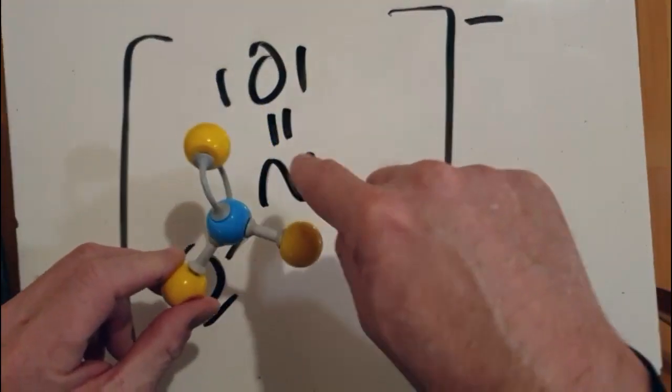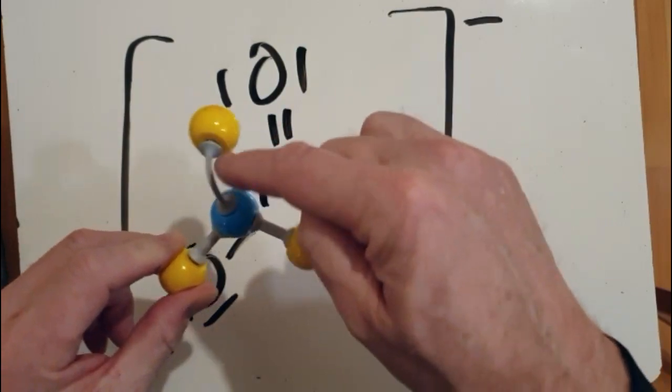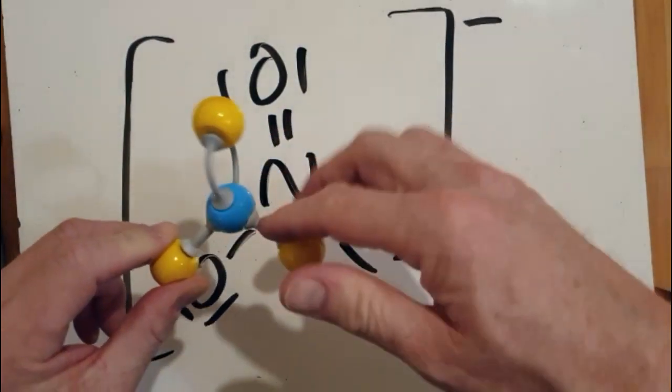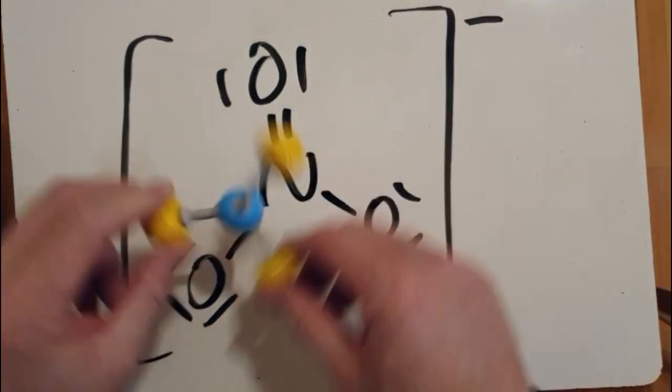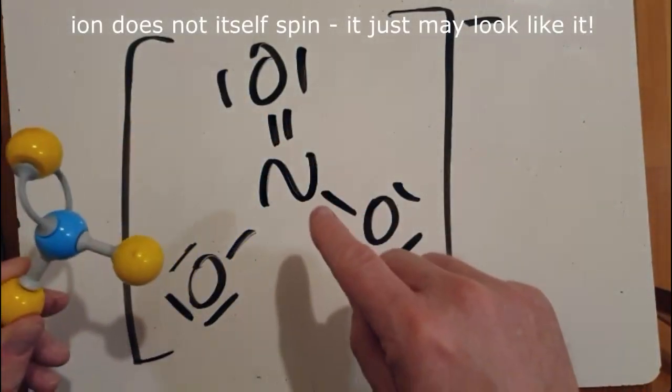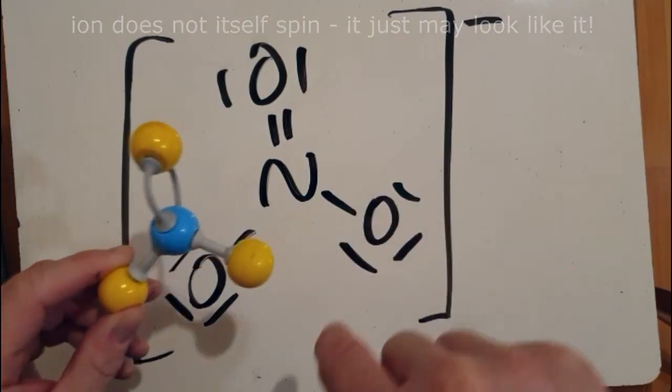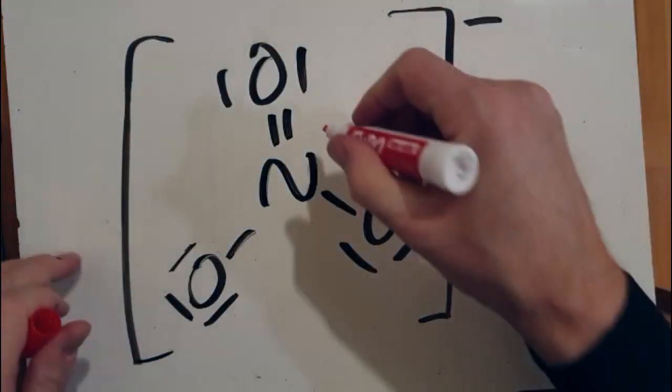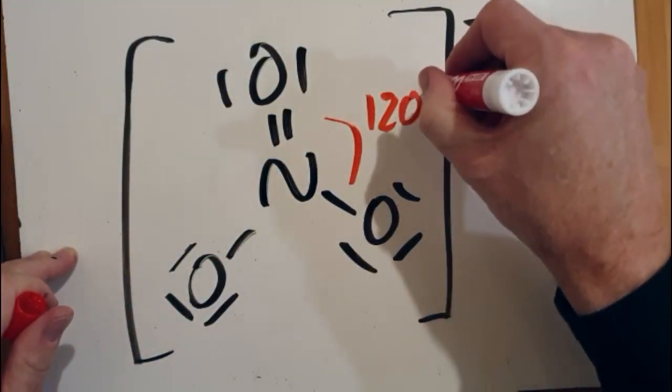Now you might think, well hold on, doesn't this bond here more repel than this single bond? No, don't forget that it's resonating. It's going around like this, spinning around the bonds, essentially. So it's 120 degrees and trigonal planar.